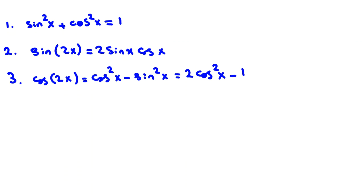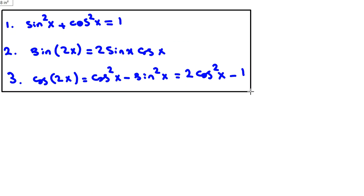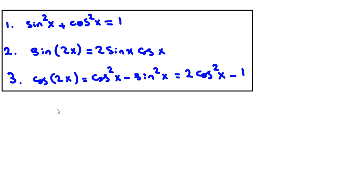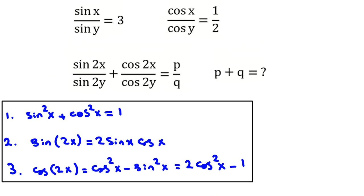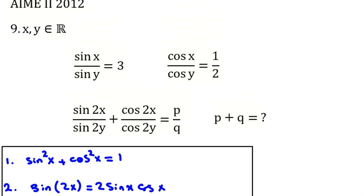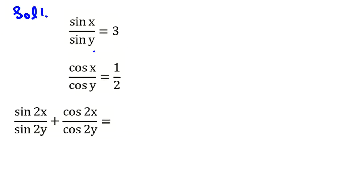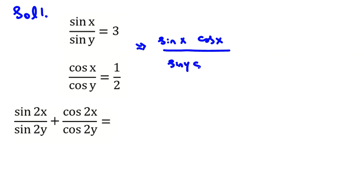You should memorize these three formulas for solving this problem. I want to solve this problem with two solutions. If we multiply these two equalities together, we have sine x cosine x over sine y cosine y equal to 3 over 2.